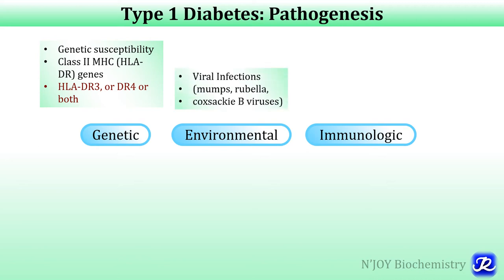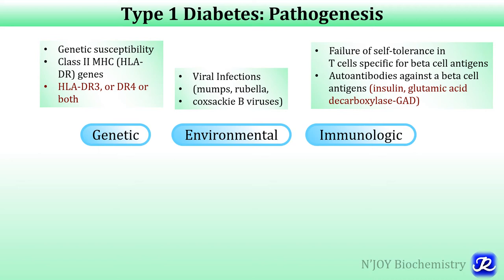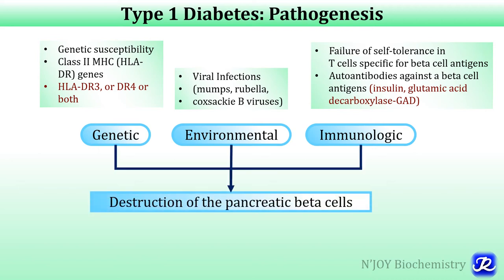The autoimmune process is thought to be triggered by an infectious or environmental stimulus, for example viral infections like mumps, rubella, and Coxsackie B virus. The fundamental immune abnormality in type 1 diabetes is failure of self-tolerance in T cells specific for beta cell antigens. One consequence of loss of self-tolerance is the production of autoantibodies against a variety of beta cell antigens including insulin and the beta cell enzyme glutamic acid decarboxylase (GAD). Islet destruction is mediated by T lymphocytes rather than islet autoantibodies. So genetic, environmental, and immunological factors ultimately lead to destruction of pancreatic beta cells and absolute insulin deficiency in type 1 diabetes.